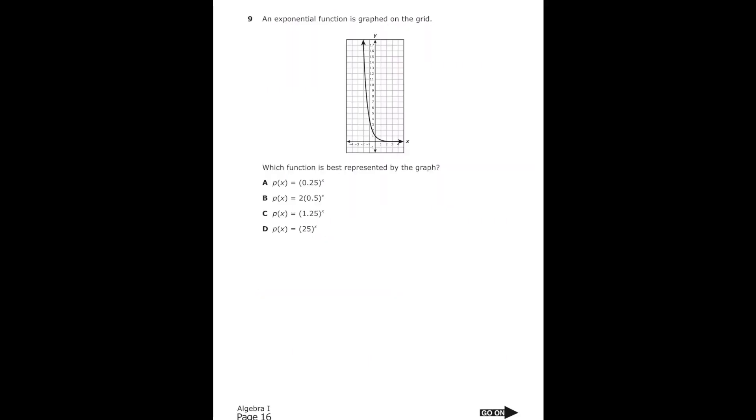Number 9 from the 2022 Algebra 1 EOC. An exponential function is graphed on the grid. Which function is best represented by the graph? This particular exponential graph is called a decay function because it's decreasing as you go from left to right. So I know that my number in parentheses has to be less than 1.